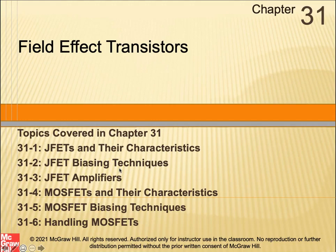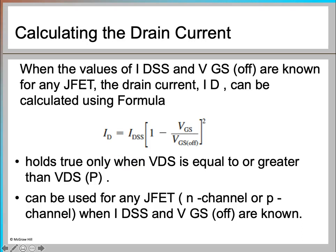Before we get into detail of different types of biasing techniques, let's first see what formula we can use to calculate the drain current. The formula is: ID equals IDSS times (1 minus VGS divided by VGS-off), squared. Here, ID is your drain current and IDSS is the drain-to-source current when your input is short circuit, or when VGS equals zero.